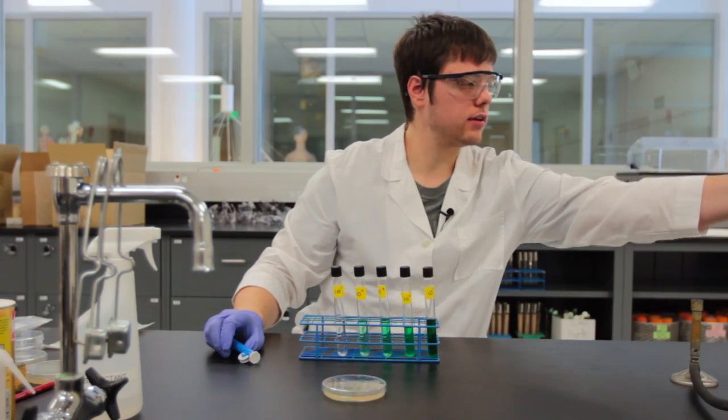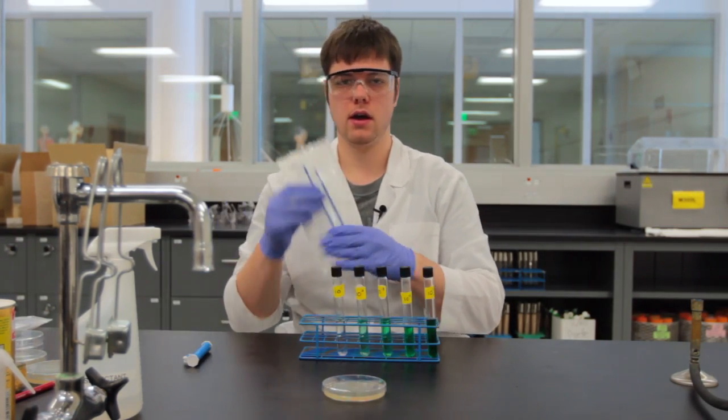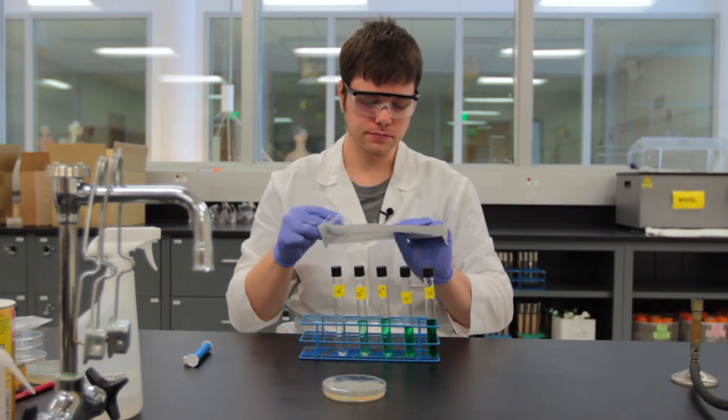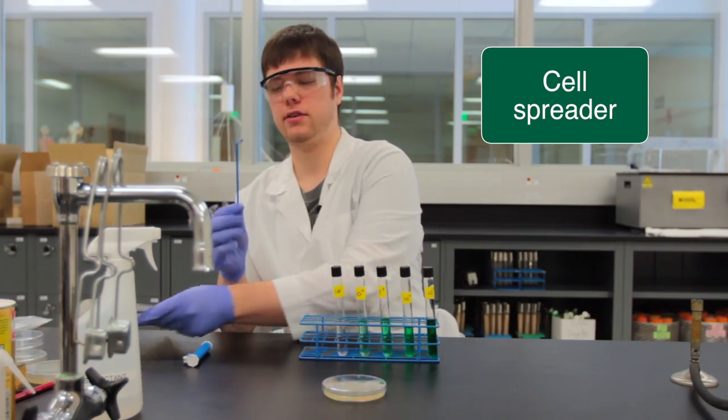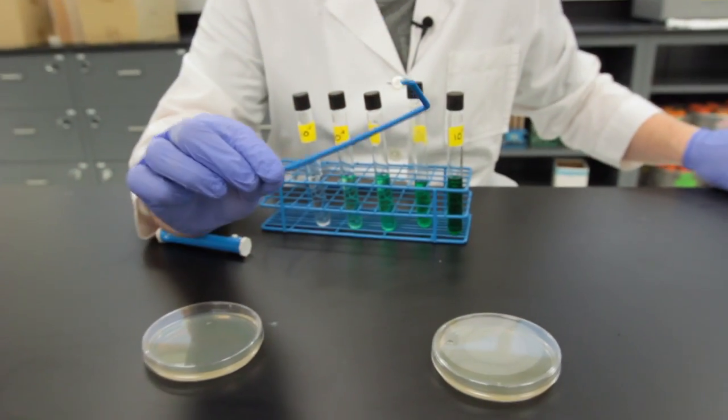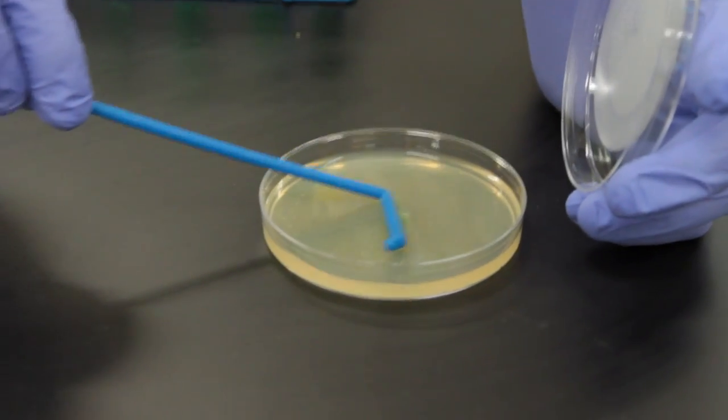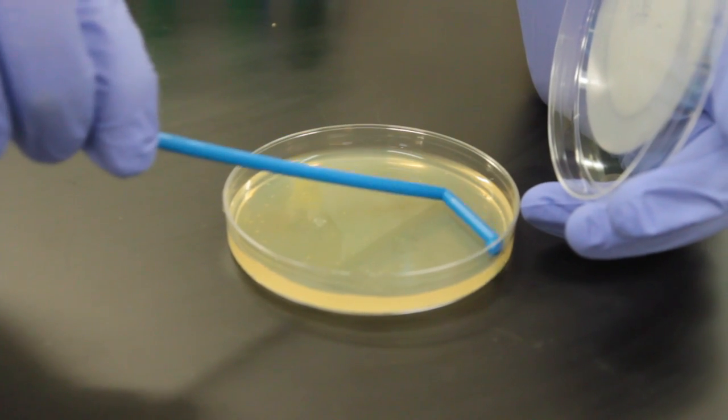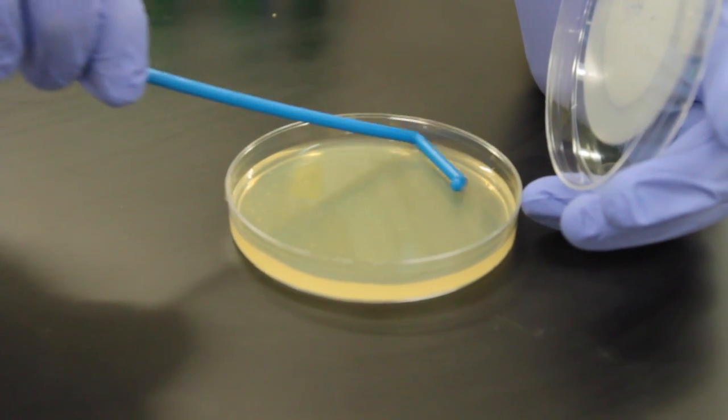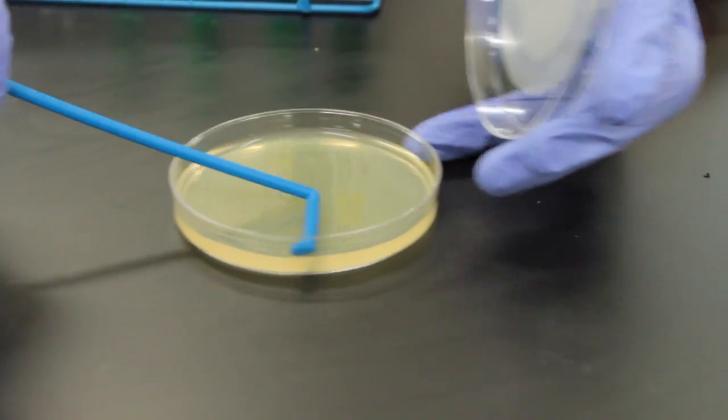I then need to grab a spreader, or affectionately known as a hockey stick. The spreader we're going to use by applying pressure to the agar as well as where our bacteria was dispensed. Notice how although I'm applying pressure, it's gentle enough that I am not destroying the nutrient agar.